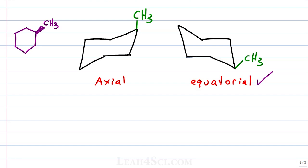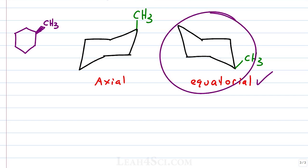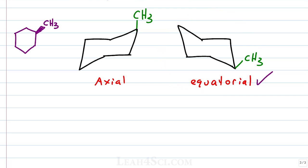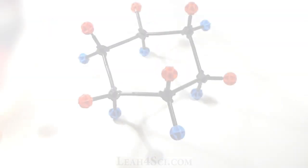Does that mean the molecule will exist as an equatorial substituent at all times? Is this the chair conformation we're going to see in nature? The answer is that we're going to see both. The chair structure can occur one way or the other at random and they'll exist in some sort of equilibrium because the chair will flip from one version to the other. Ring flips are tricky if you simply memorize what's going on, so let's switch over to the model kit and understand the nature of the interconversion.